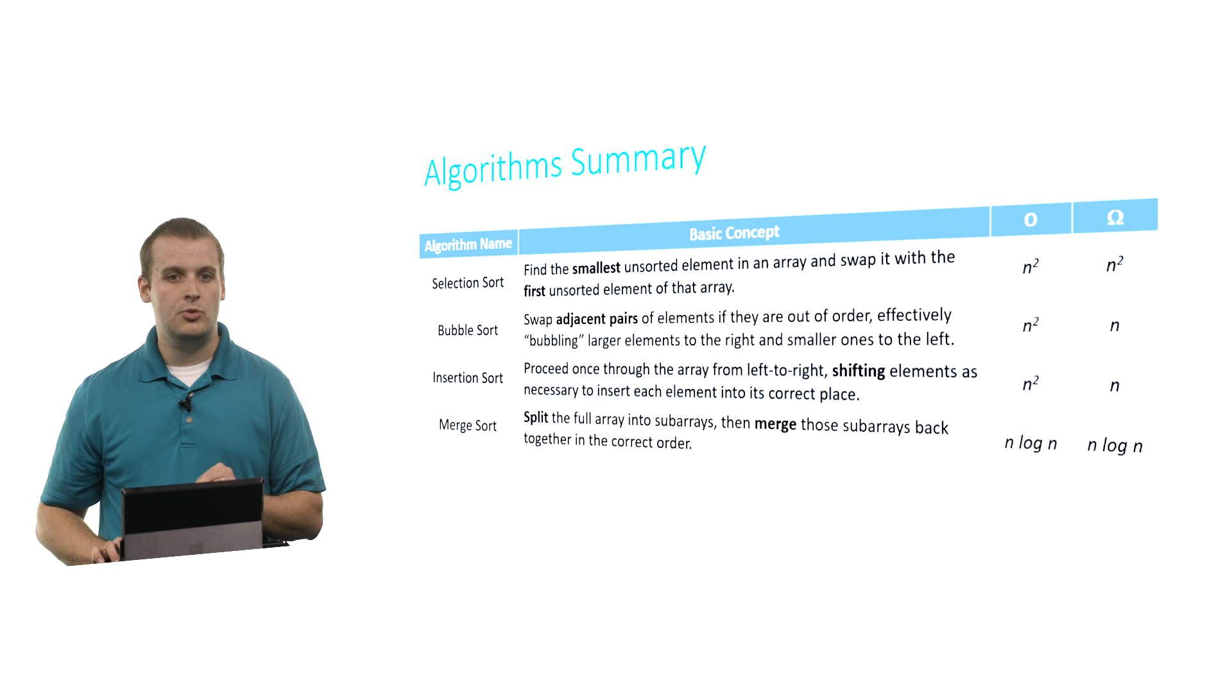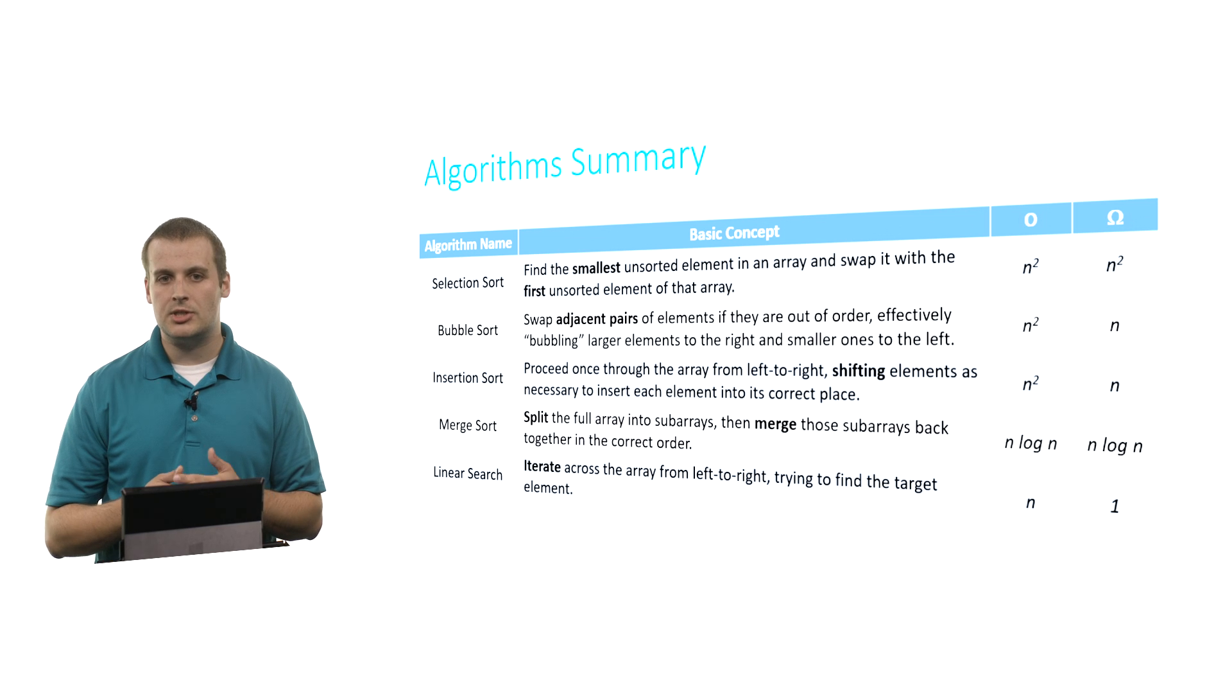We also talked about two searching algorithms. So linear search is about iterating. We proceed across the array once, from left to right, trying to find the number that we're looking for. The worst case runtime is big O of n. It might take us iterating across every single element to find the element we're looking for, either in the last position, or not at all, but we can't confirm that until we've looked at everything. In the best case, we find it immediately. The best case runtime of linear search is omega of 1.